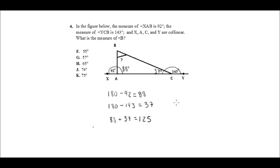All right, and then, so I know that these two together add up to 125. So whatever's left is what B has to be, right? So whatever is left of 180. So the last thing I do is just take 180 minus 125, and that equals 55, which is answer F.